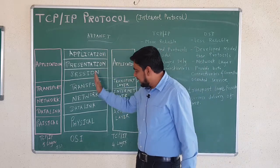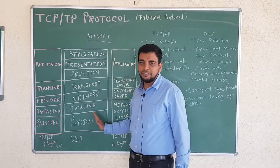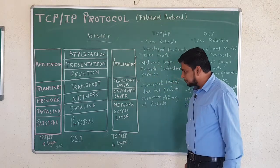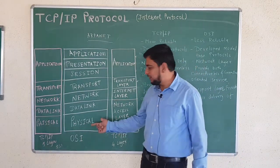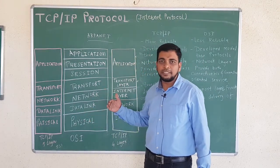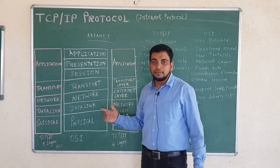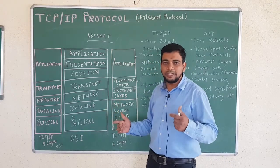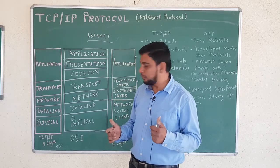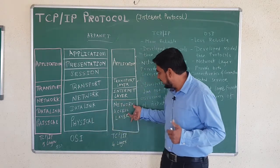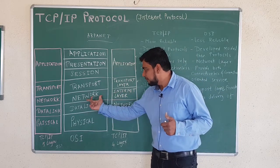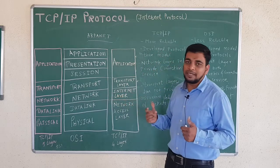The functions of each layer we have already discussed in the previous video — what actually happens in every layer. Various topologies are decided in the physical layer, then how to encode data, multiplexing, demultiplexing, node-to-node delivery, flow control, and error control. These functions are provided by the network access layer, and the internet layer is very similar to the network layer.